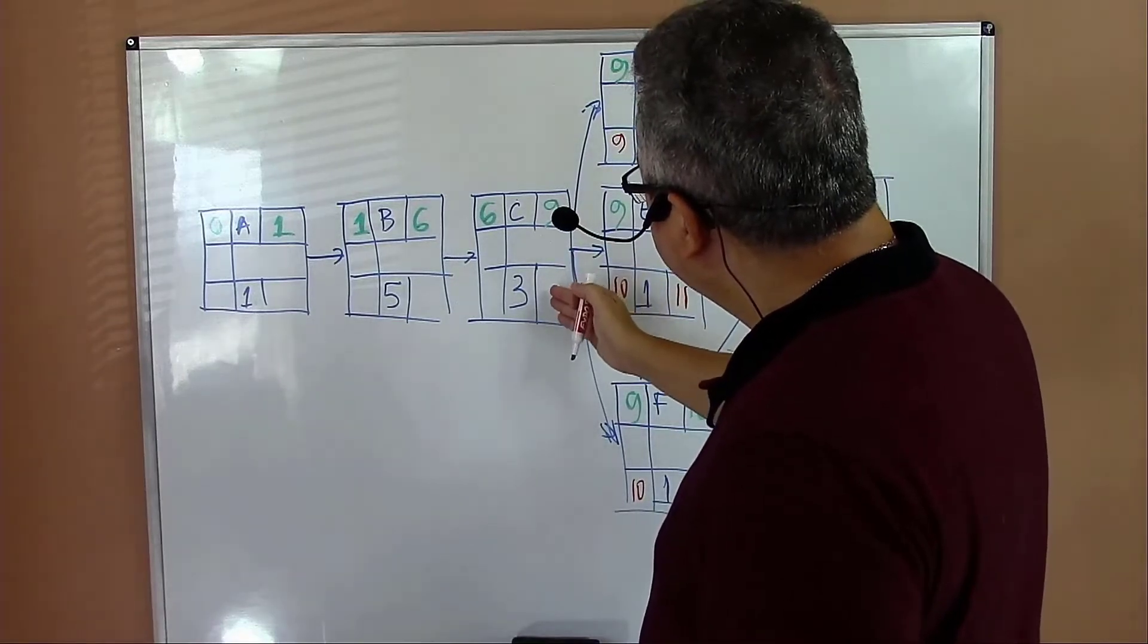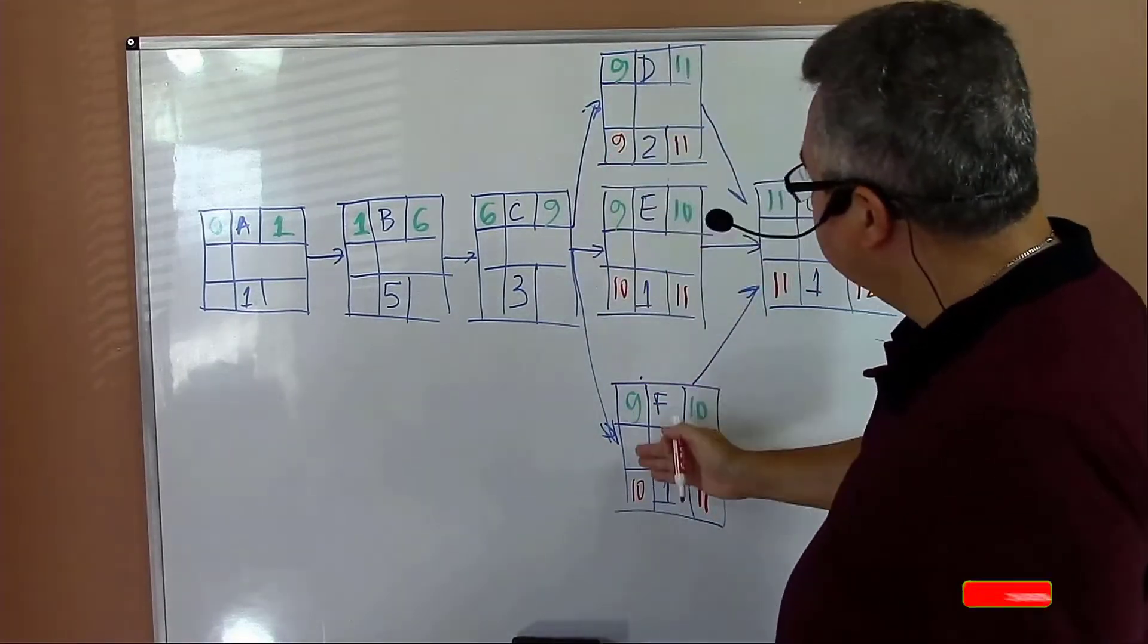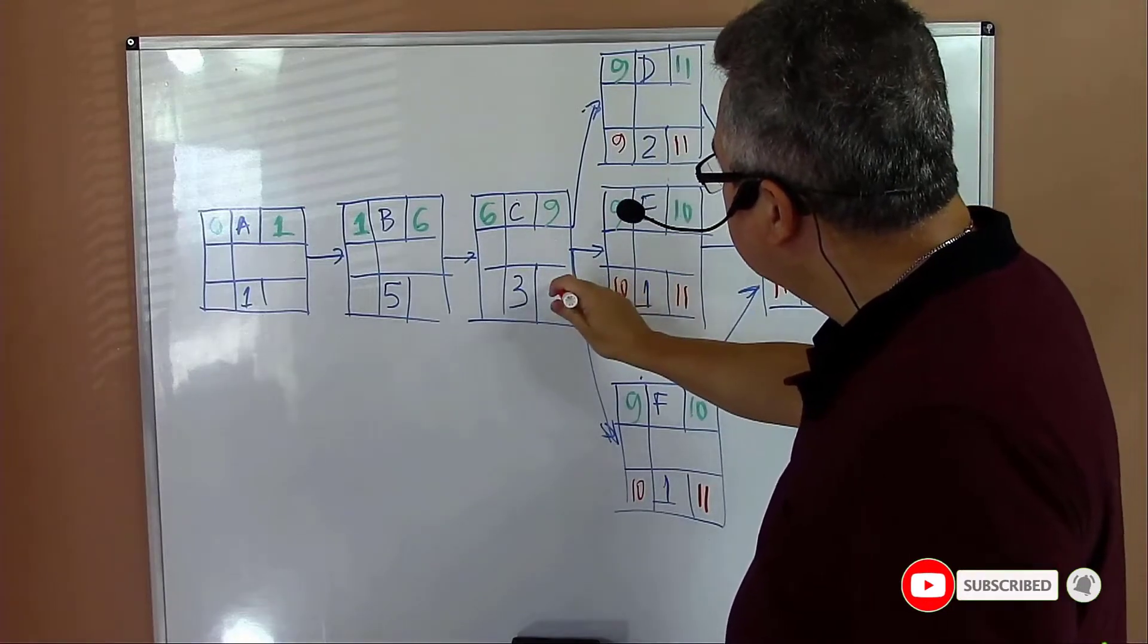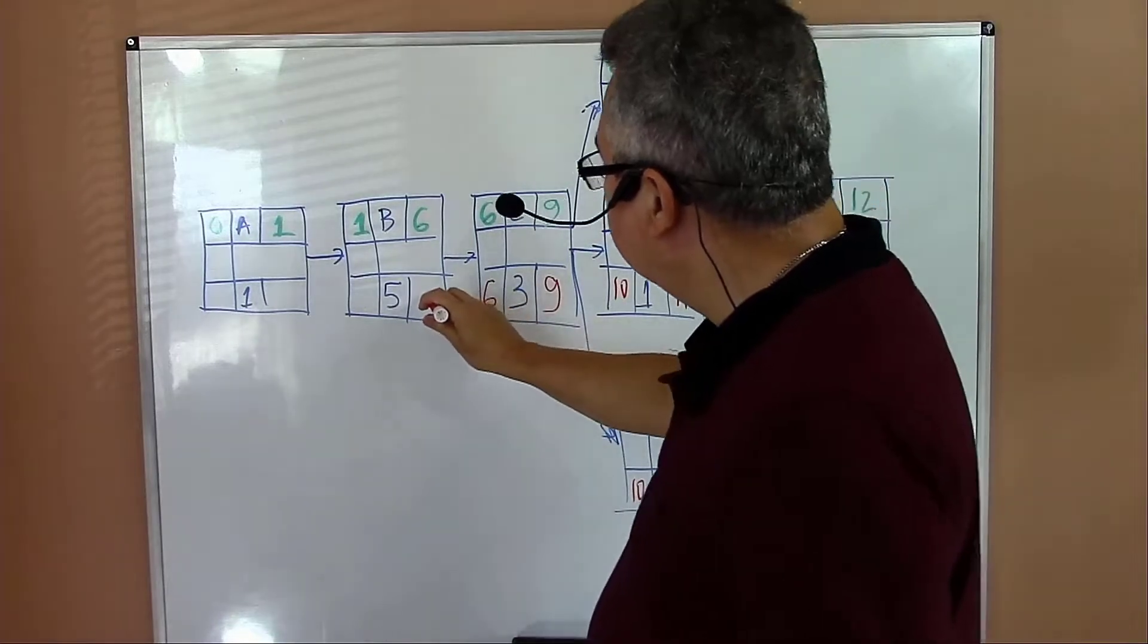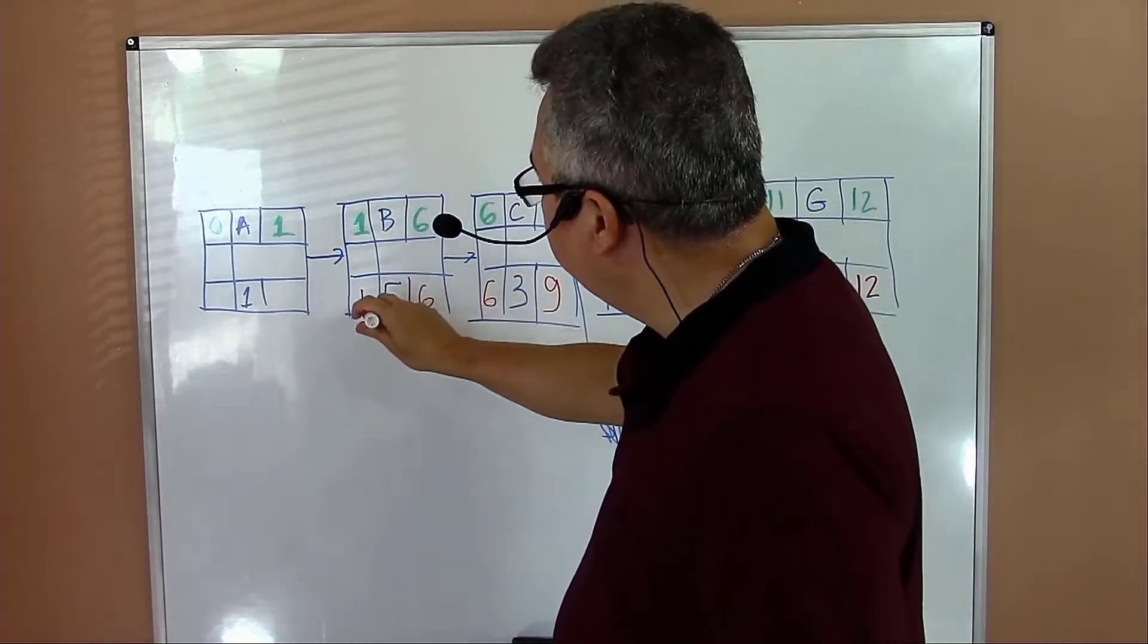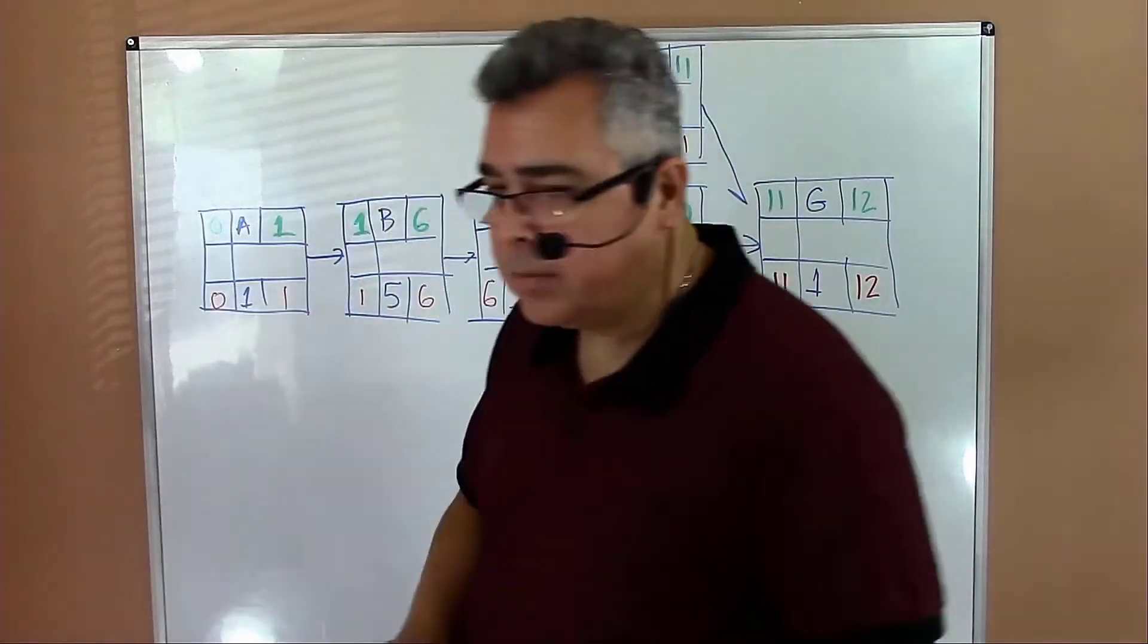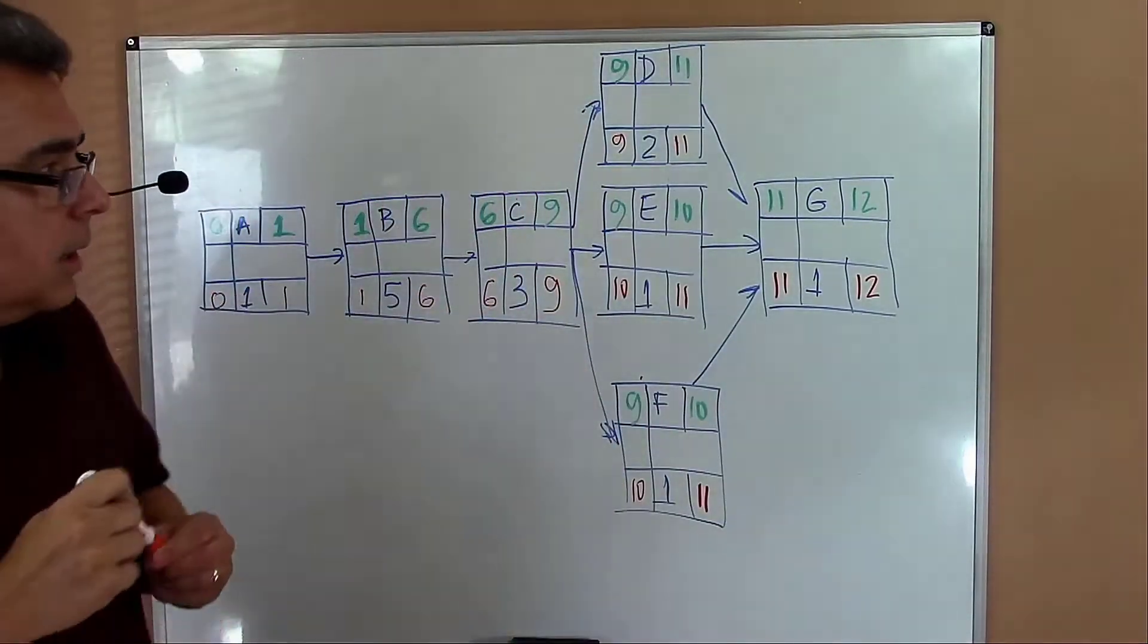That is a bust activity, so you have to use the lowest number. Nine minus three equals six. Move six here. Six minus five equals one. One minus one equals zero. That's the backward path of that network.